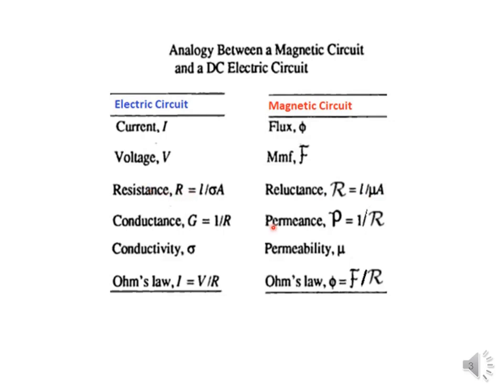The permeance, which is the opposite of reluctance, is related to conductance, which is the opposite of resistance. The term permeability, represented by mu, is correlated with the conductivity of the material. Finally, similar to Ohm's law, flux phi is equal to force divided by reluctance, just as current equals voltage divided by resistance.